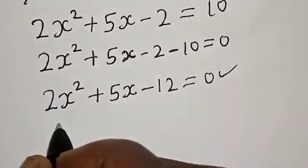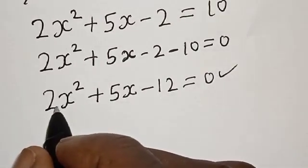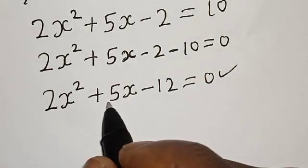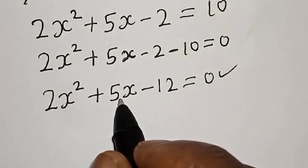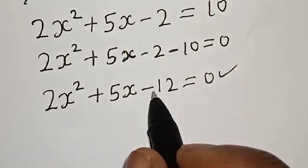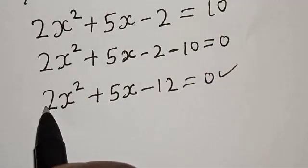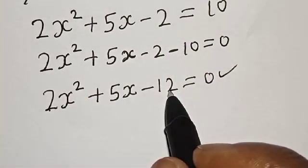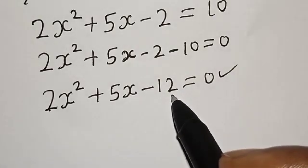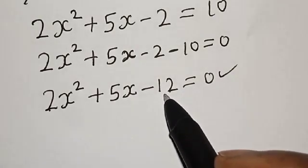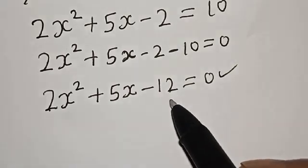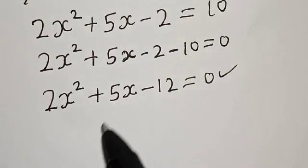The coefficient of x² here is 2, the coefficient of x is 5, and the constant is -12. If you multiply 2 by 12, it gives you 24. You look for two numbers so that the product will give -24 and the sum will give +5.